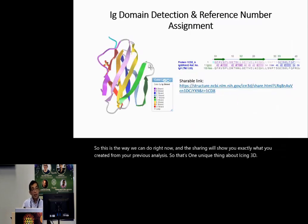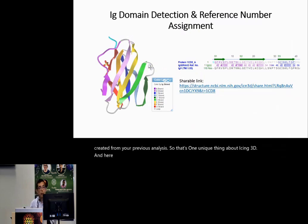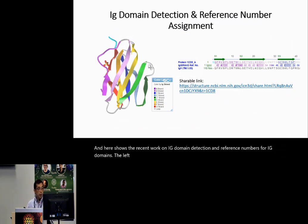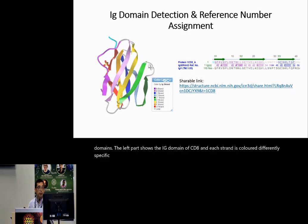Here is the recent work on IG domain detection and the reference numbers for IG domains. The left part shows the IG domain of CD8, and each strand is colored differently with specific colors, so you can tell directly from the color which strand it is.